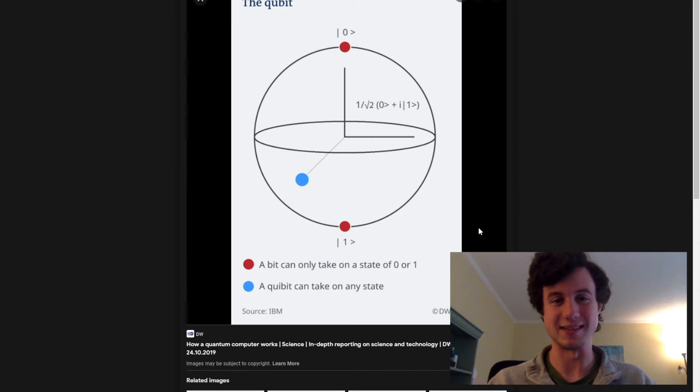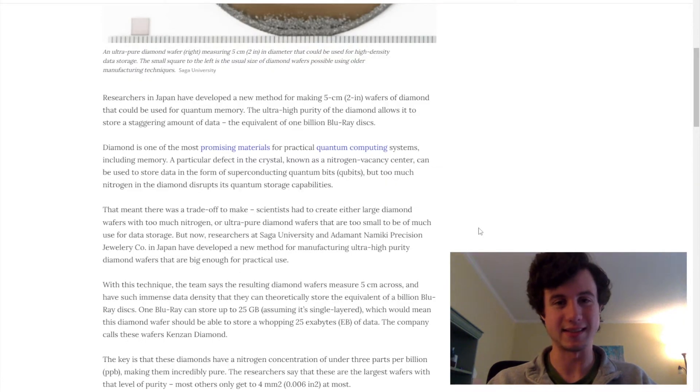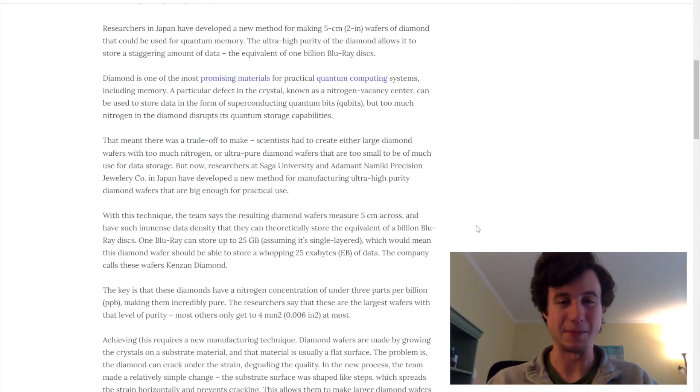But anyway, into the less technical parts of this: the researchers that made this new type of diamond wafer talk about how in the past they were able to make diamond wafers a similar size, but it had too much nitrogen to really be useful for actually storing the data, or they can make high purity wafers that would have been too small to really use.